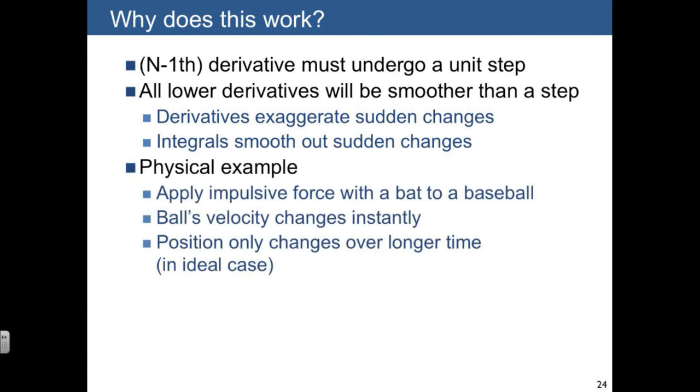A physical example of an impulse causing a change in the (n-1)th derivative is applying an impulsive force with a bat to a baseball. The ball's velocity changes instantly. We have a second-order differential equation, and it's the (n-1)th derivative—in other words velocity—that changes instantly. But the position doesn't change over the brief duration of that impulse. It only changes over a longer period of time as the ball gets carried away with its new velocity.